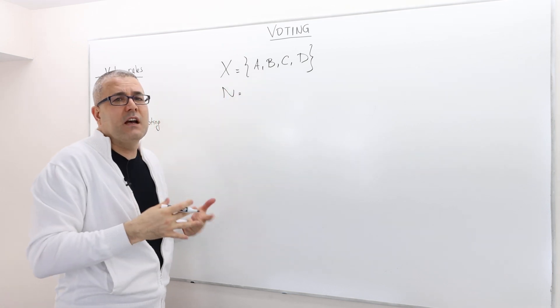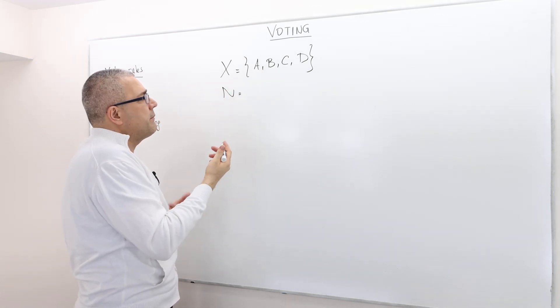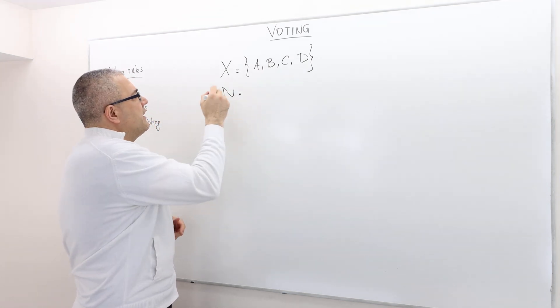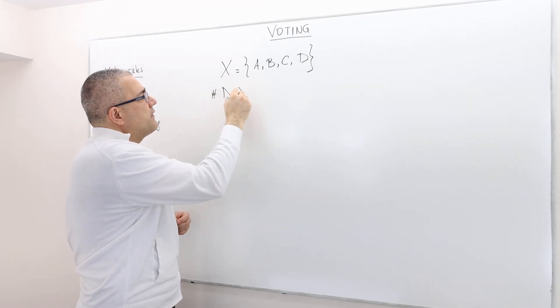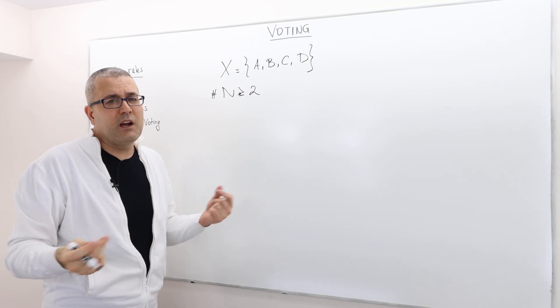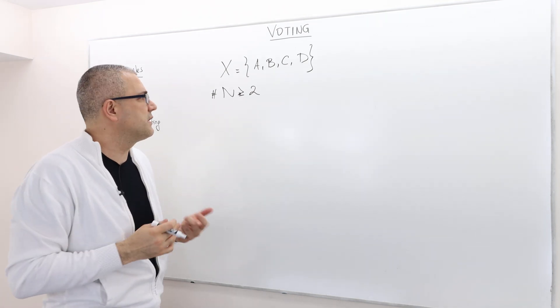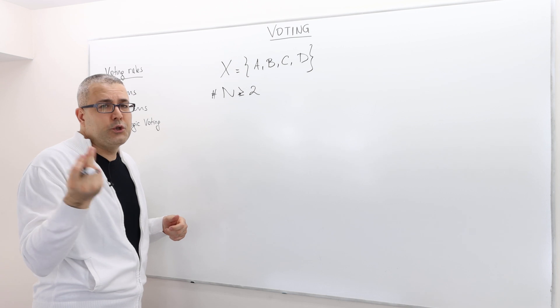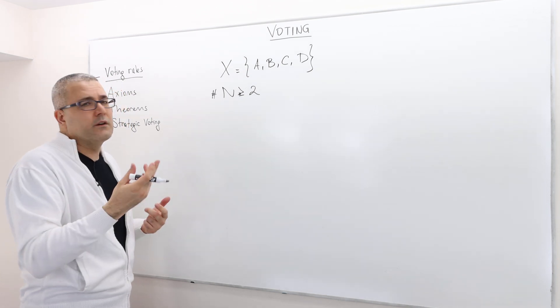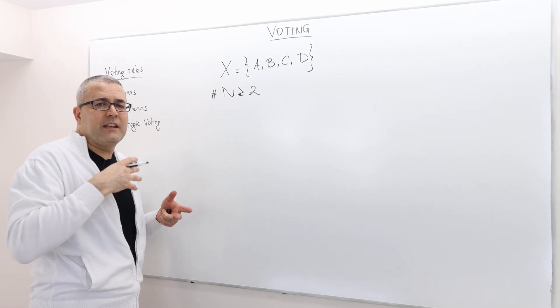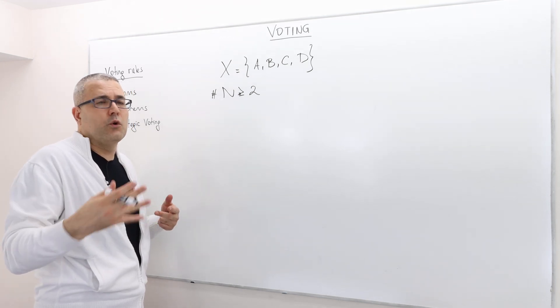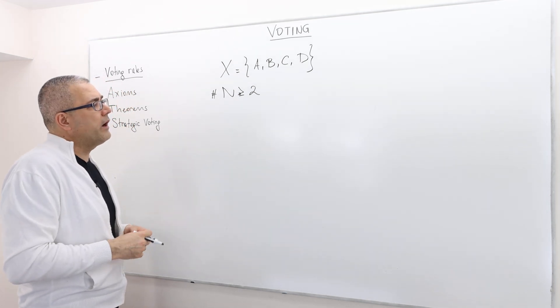Then we have some individuals. What I need is that the number of individuals, voters, is greater than or equal to two. If there's only one individual it's not really an interesting problem. Just choose whatever this agent prefers. Things get more interesting if we have two or more individuals.